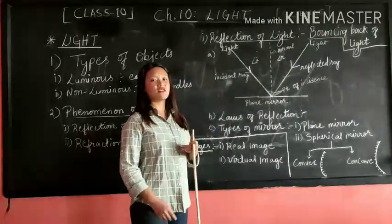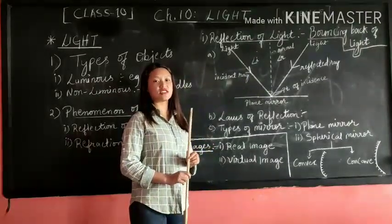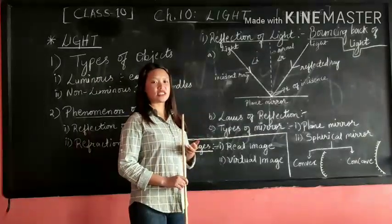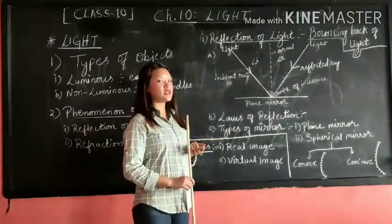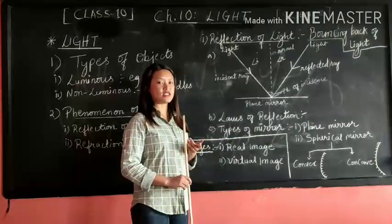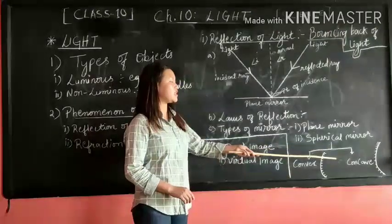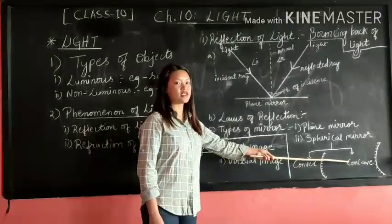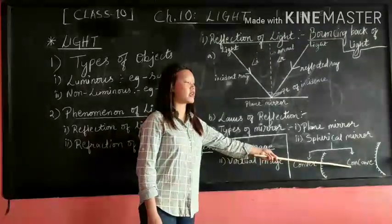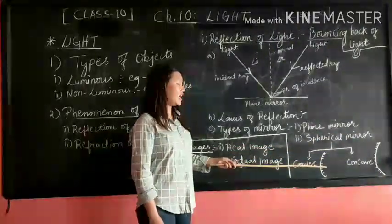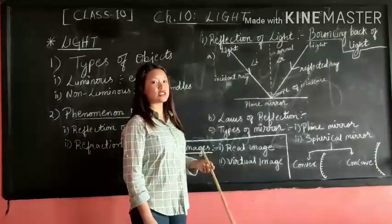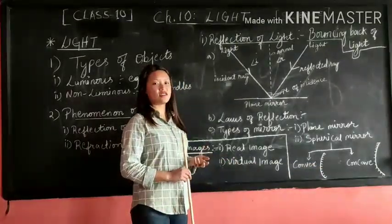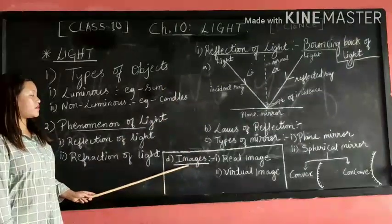One example of concave and convex mirror: take a large highly polished spoon and view your face in it. If you look closely at it, you will find that the surface of the spoon that curves inwards can be compared to concave mirror, and the surface of the spoon that curves outwards can be compared to convex mirror.